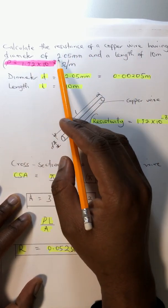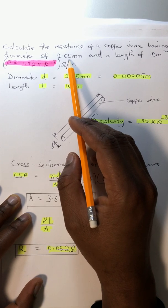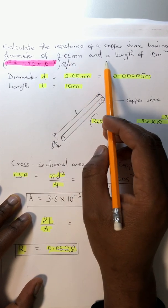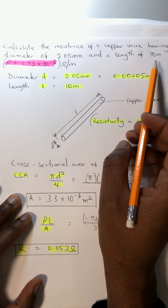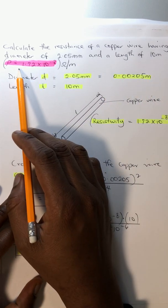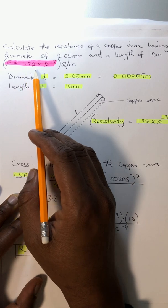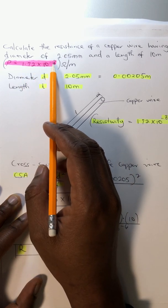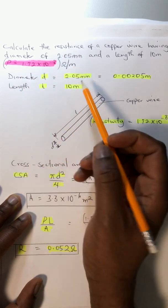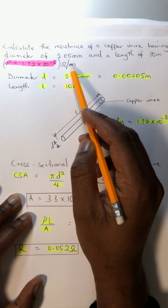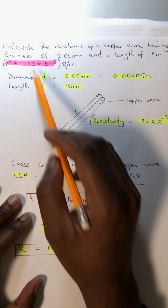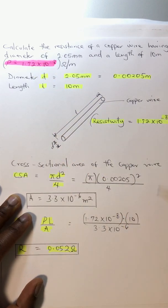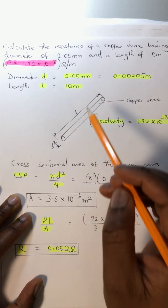Calculate the resistance of a copper wire having a diameter of 2.05 millimeters and a length of 10 meters, given the resistivity equals 1.72 × 10^-8 ohm-meters. To calculate this mathematically, we need to identify the parameters.